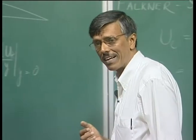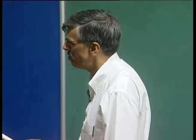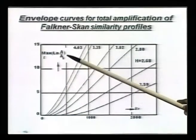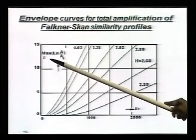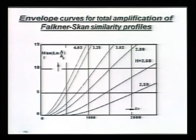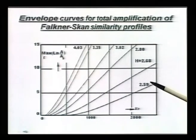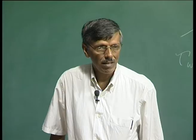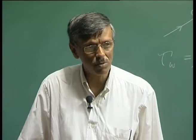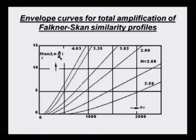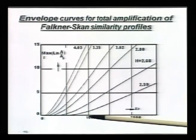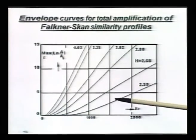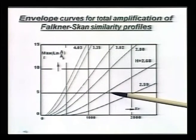Recall we plotted that capital N factor, which was nothing but the maximum of ln(a/a_naught) scanned over all possible frequencies. What we have done here is plot that N factor variation with Reynolds number for different values of shape factor. This is your Blasius profile at H equal to 2.59, and any values above this correspond to an unstable profile because H is more than the Blasius profile.